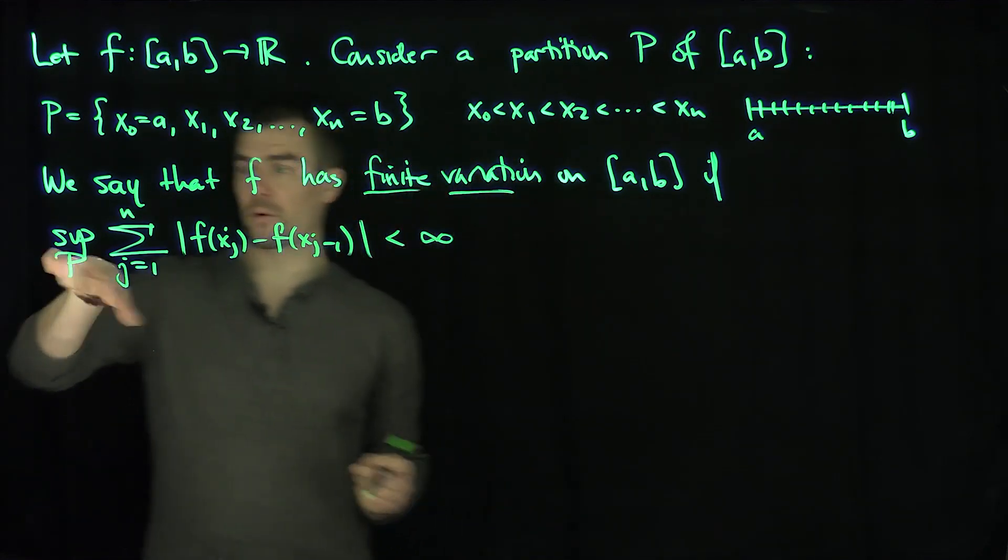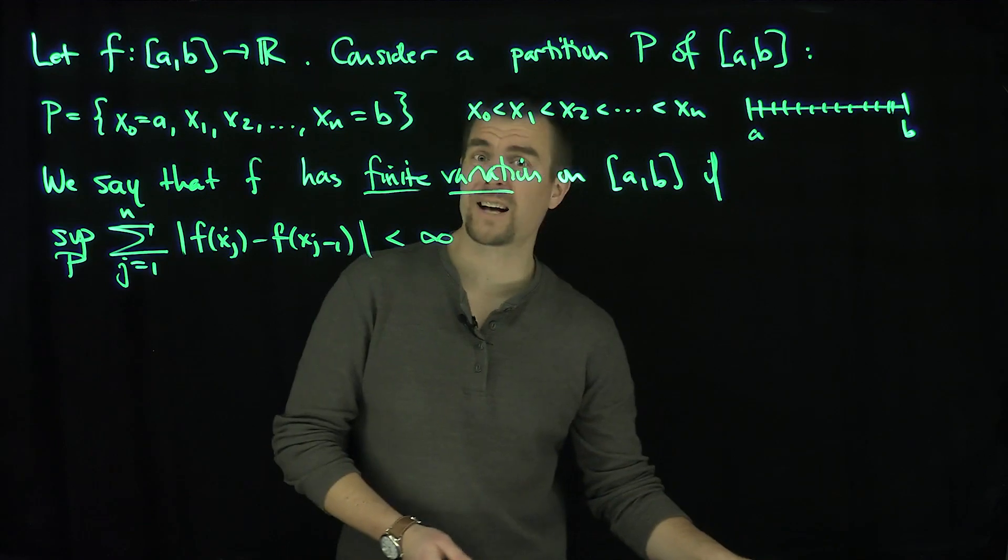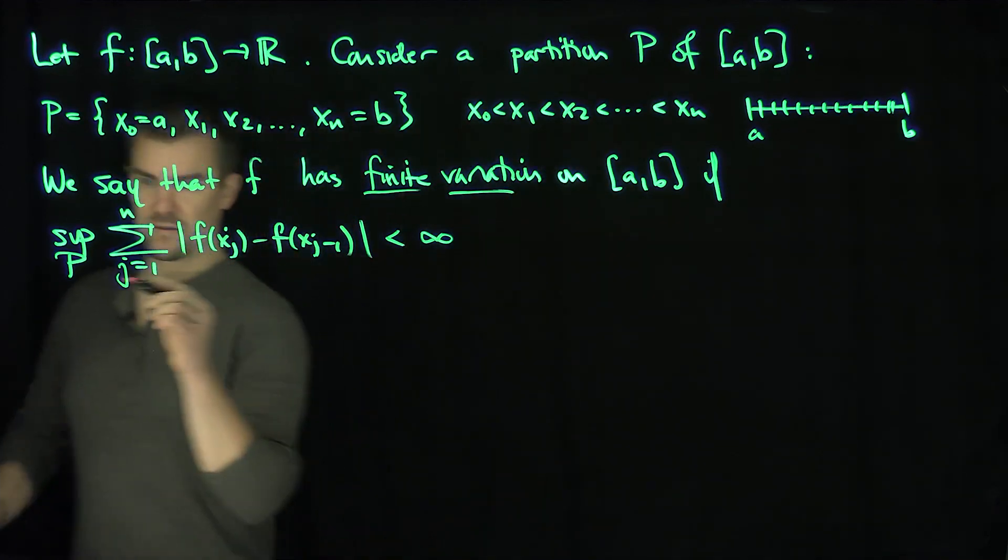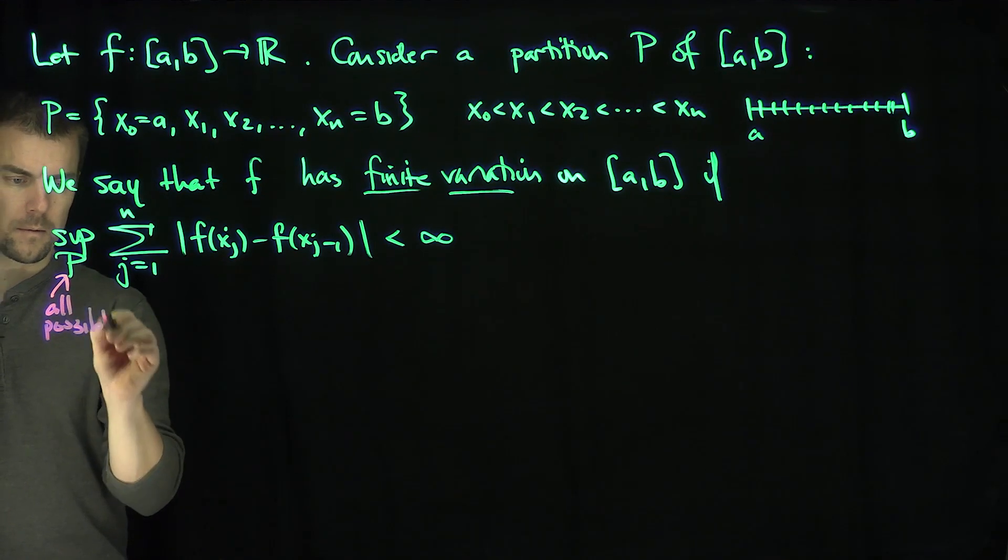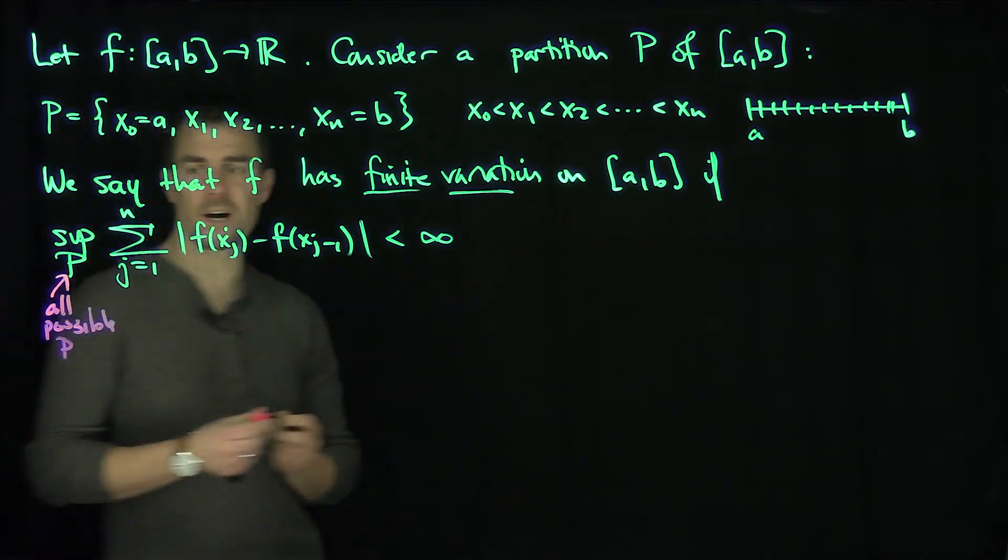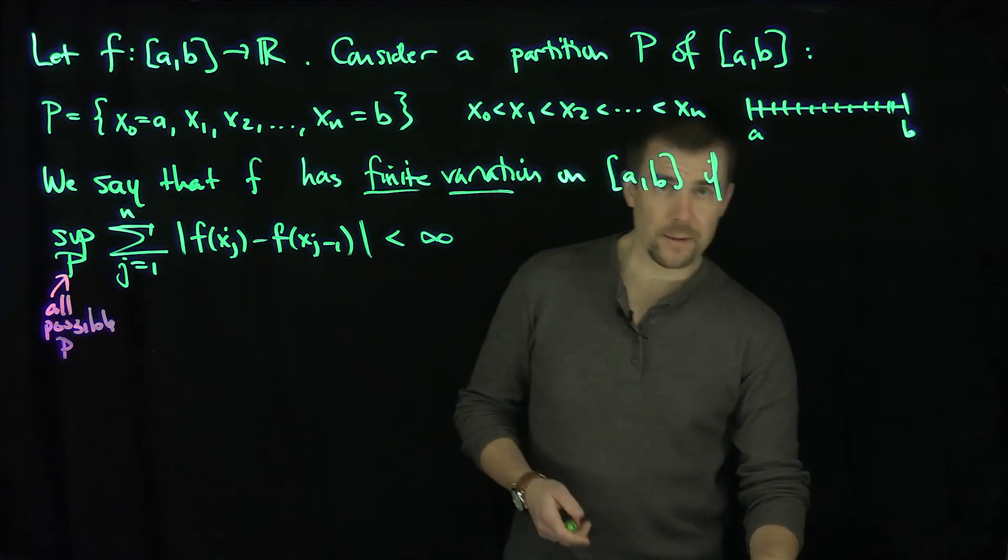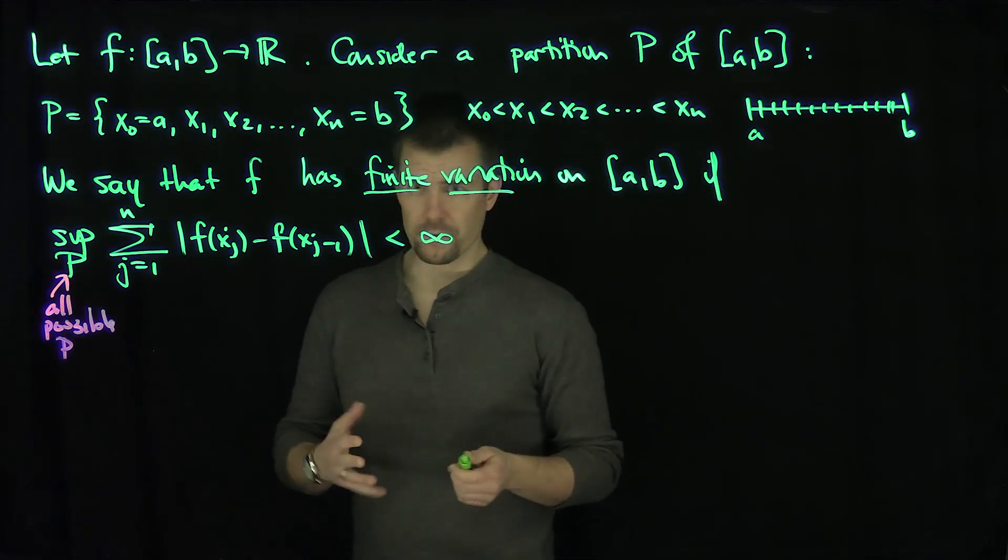The supremum is taken over all partitions, all possible partitions of [a,b], of which there's an uncountable number. So we're going to explore functions of finite variation.